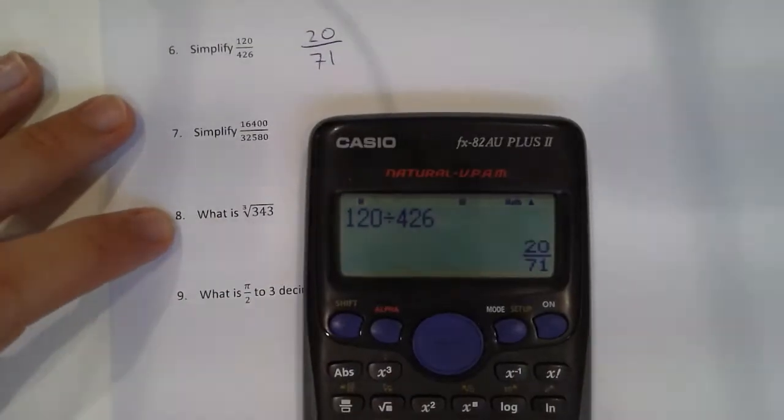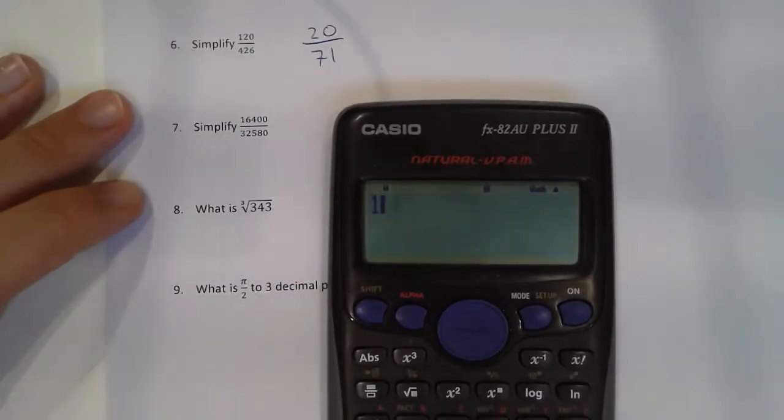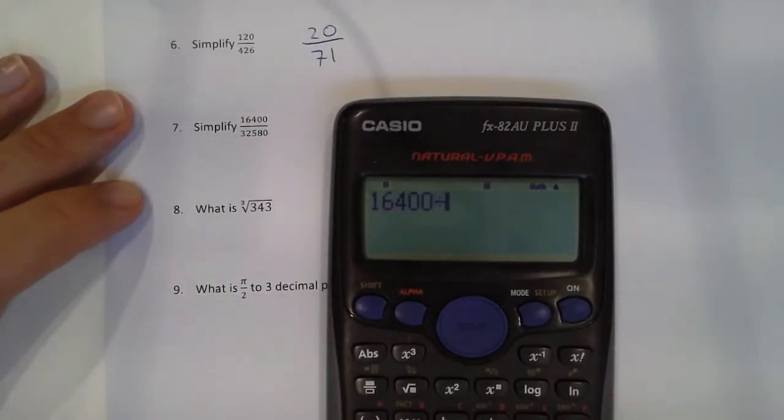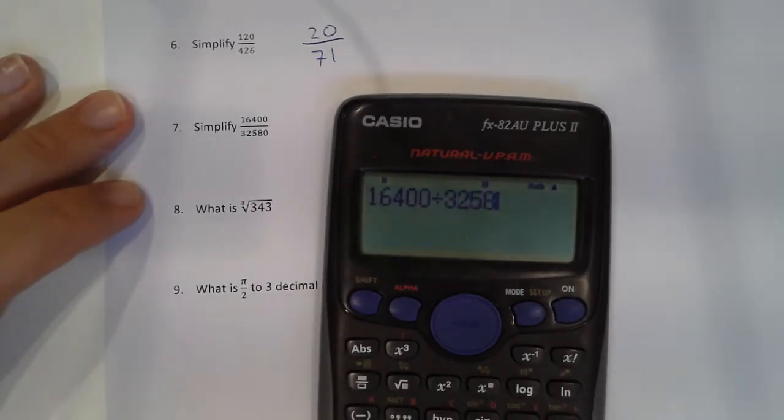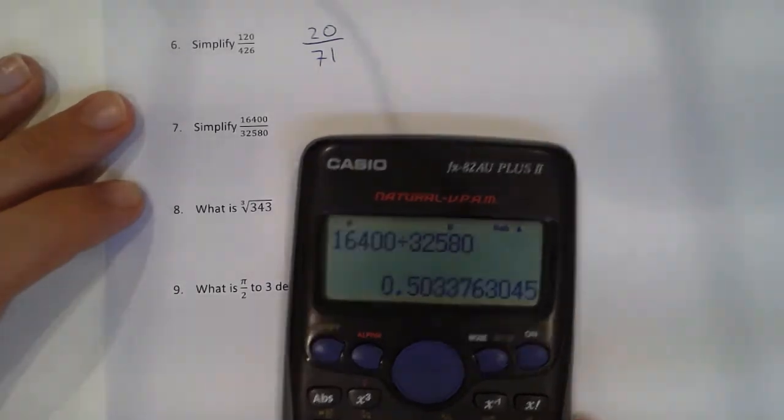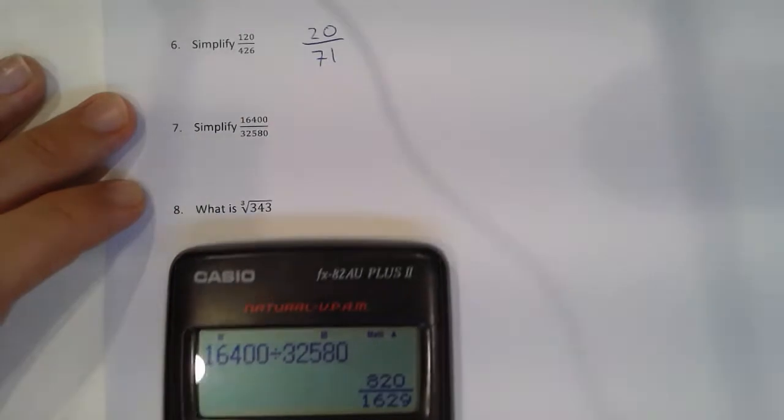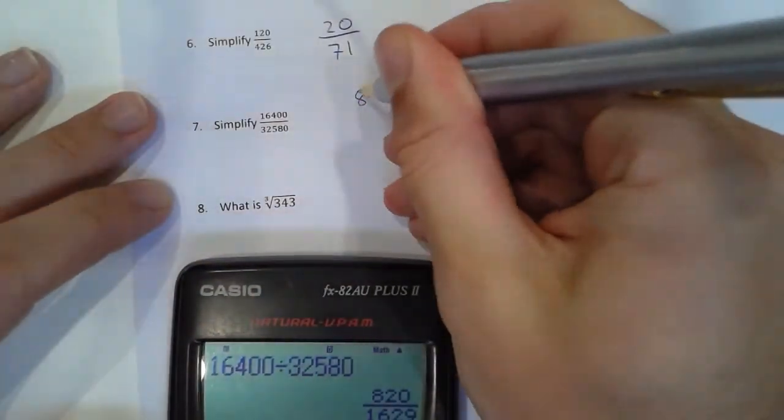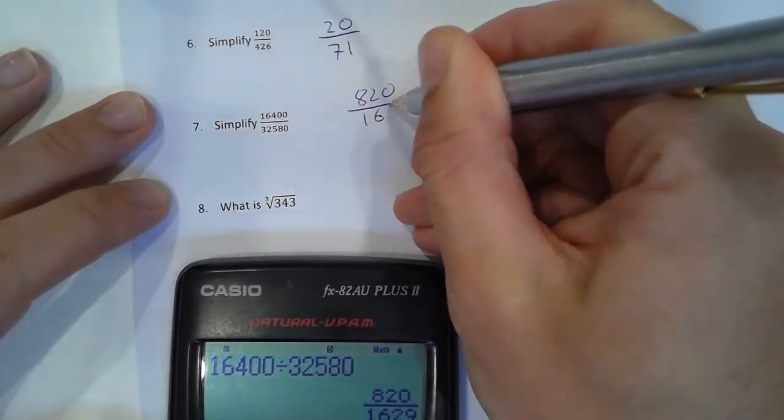For number 7, let's try that one. 16,400 divided by 32,580. There's it as a decimal. So as a fraction, it's 820 over 1,629.